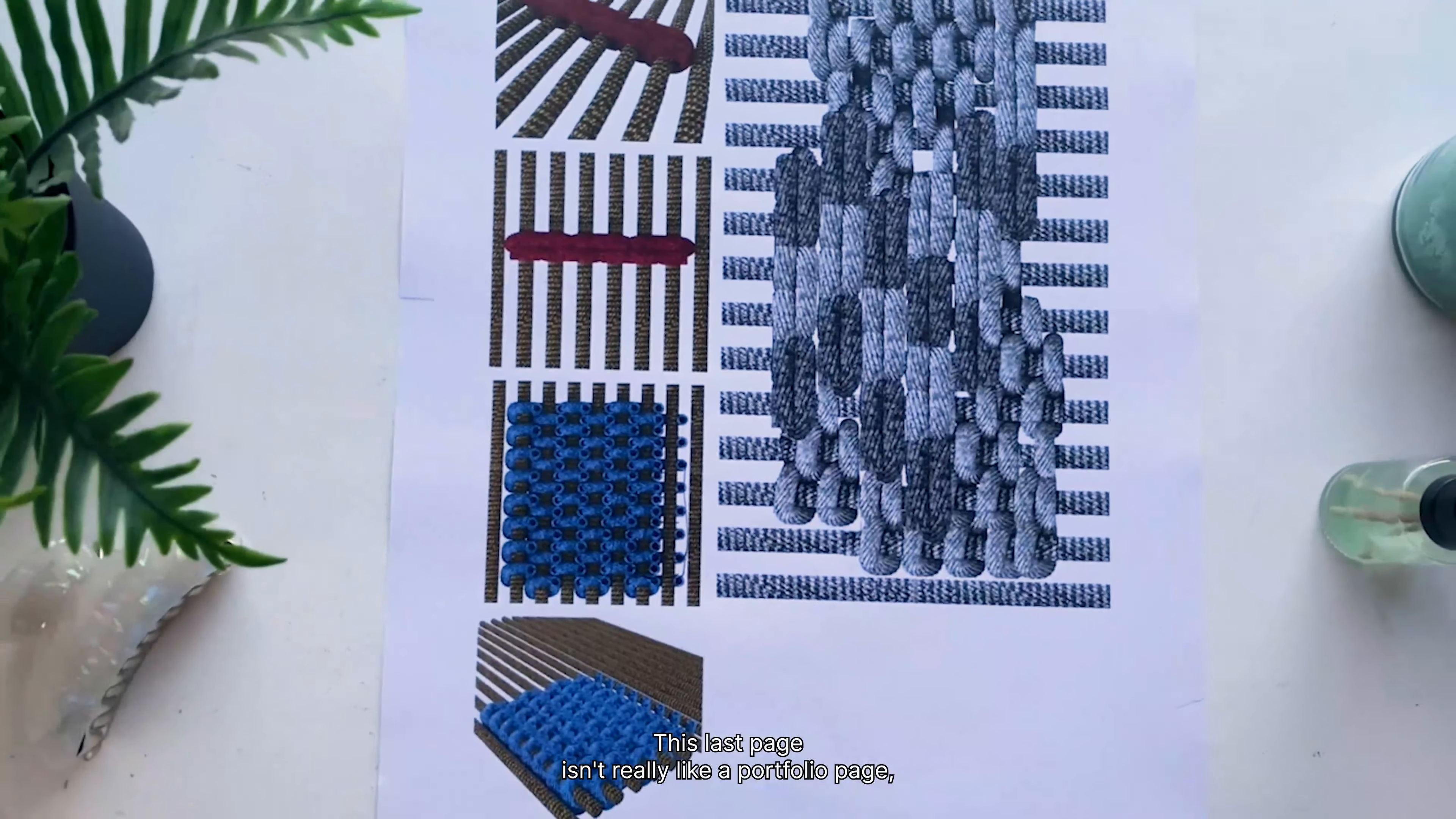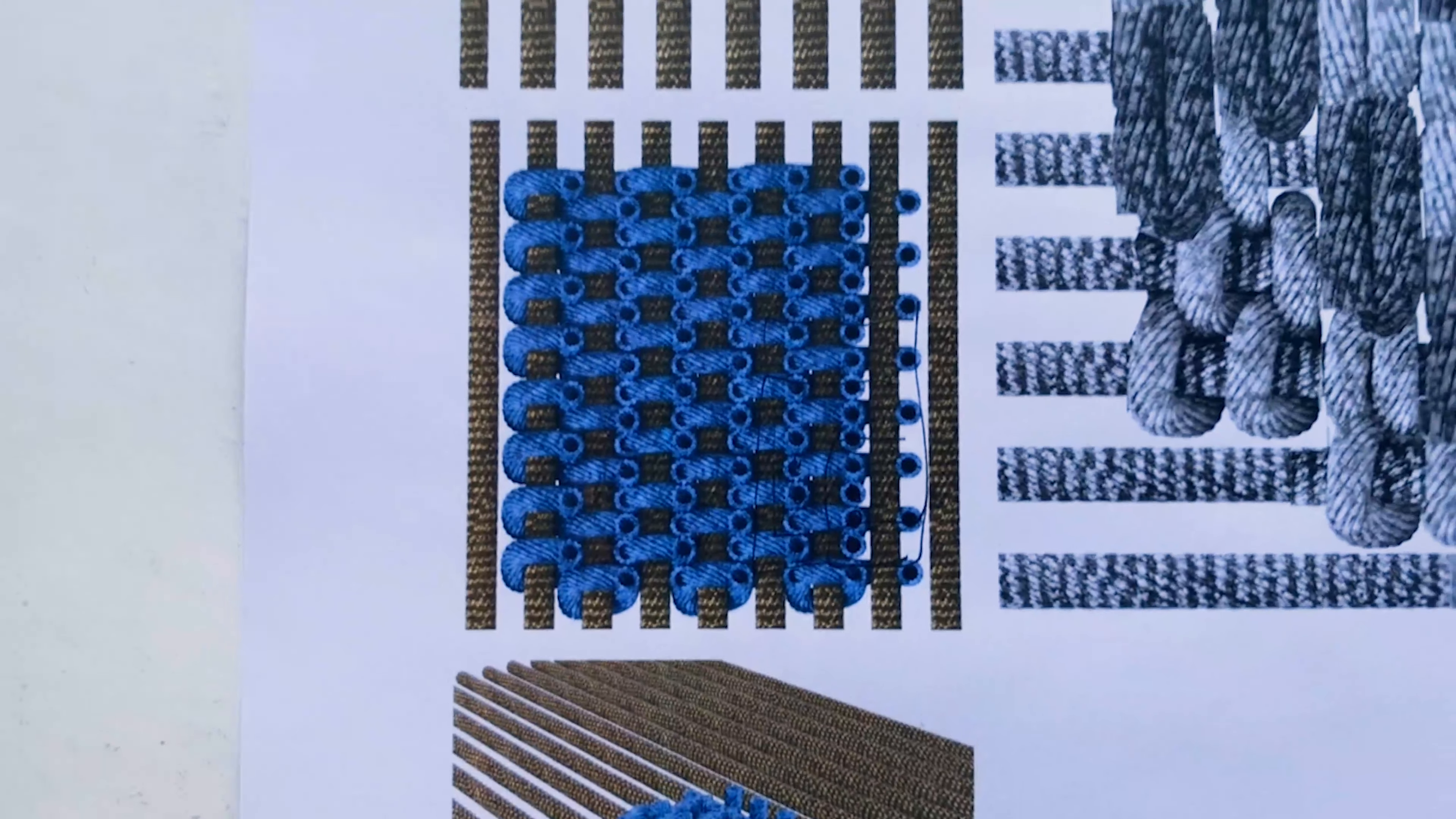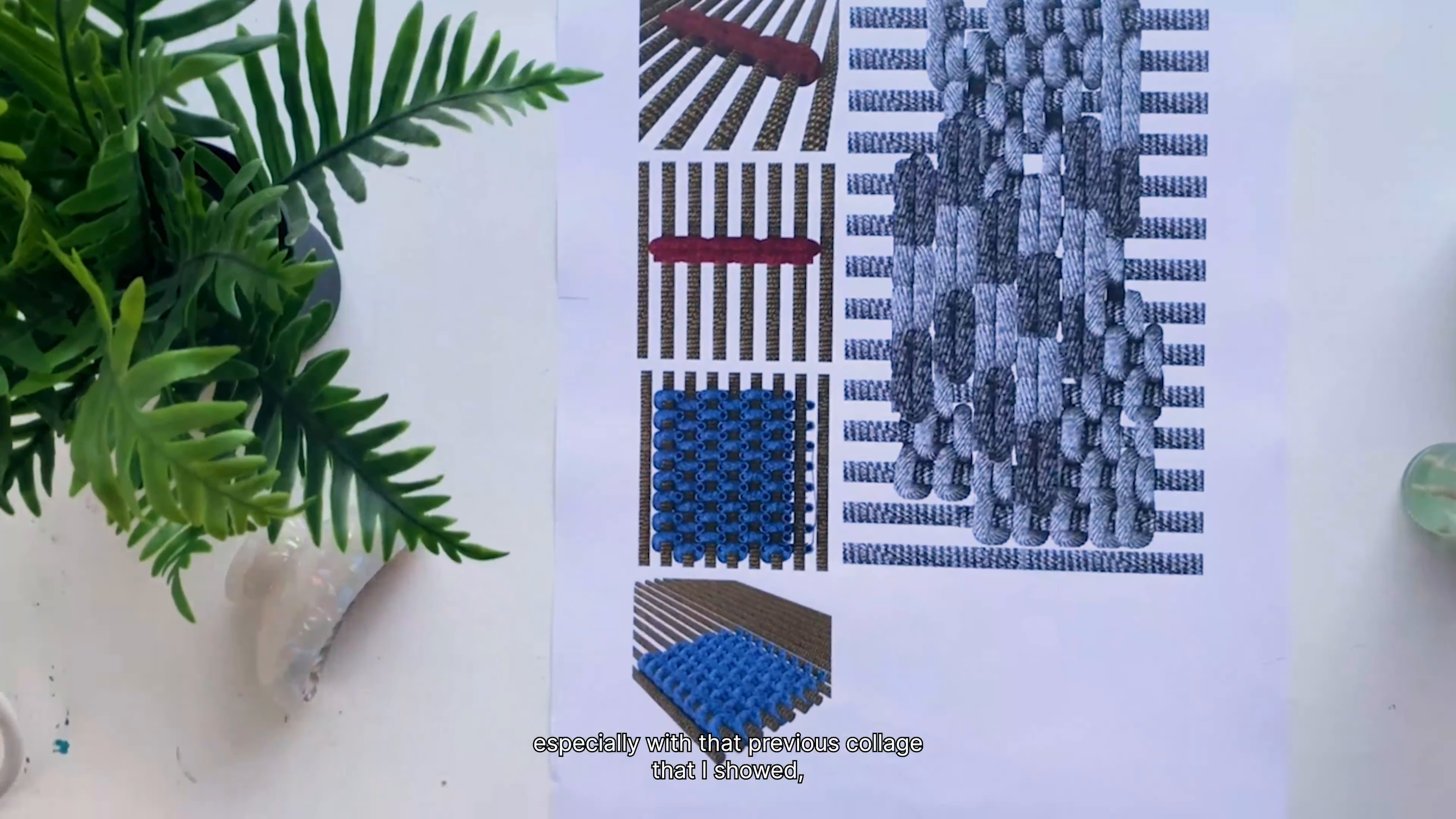This last page isn't really like a portfolio page but more just tests that I was doing. So moving on from that render I really wanted to bring those carpet-like qualities into the weaves and threads themselves. Here I was actually testing out a different type of knot which is the Turkish knot, almost looks like pasta. And again using bump materials and different kinds of images to see how the quality is drastically changed just by applying a different material. So I think this week's been really successful, especially with that previous collage that I showed.